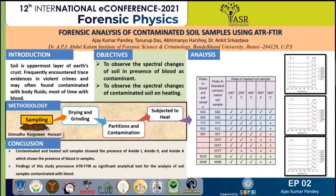Samples were collected from three sites, chosen in a triangular manner so that they could represent the overall spectral properties of Jhansi. The samples were then cleaned, dried, and ground manually. After that, partitions of the samples were made — one partition was kept separate, labeled as standard samples, and the other partitions were contaminated with blood.